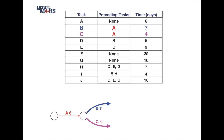Moving down the table, we consider tasks B and C at the same time because both have A as a preceding task, so they follow the circle at the completion of task A. Looking ahead, it's convenient to do two more tasks simultaneously: task D follows on from B, and task E follows on from C, so both arrows are drawn from the completion circles of tasks B and C.